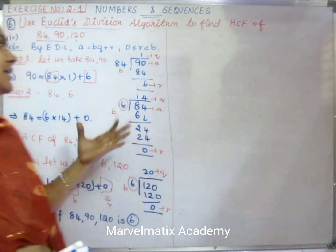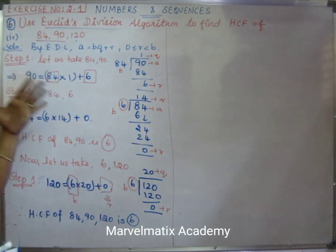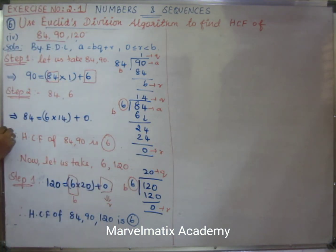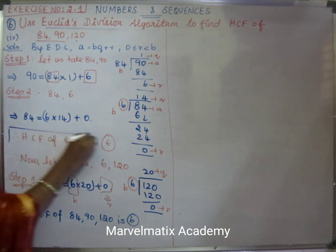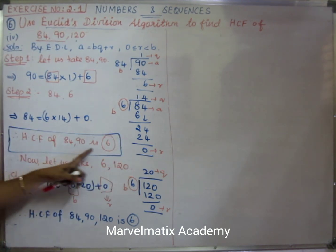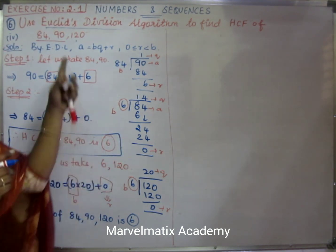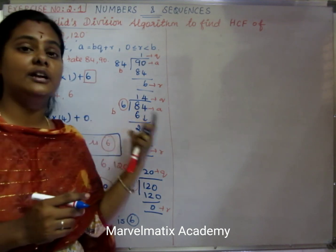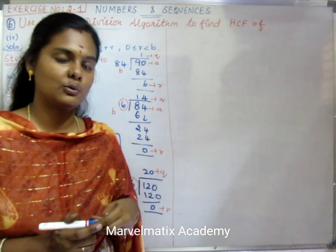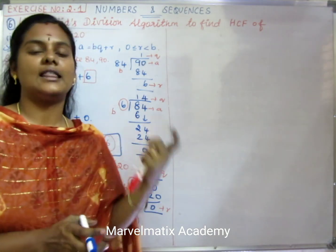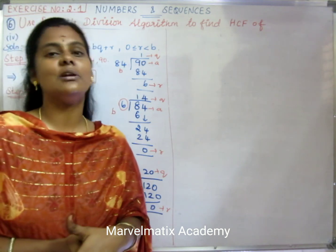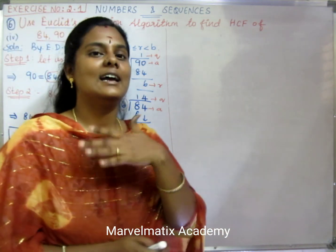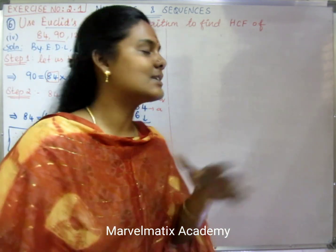These 3 numbers are the result. The HCF value is 6. That is the third number of that value. This is the definition from the previous page — I will explain the explanation of that page.